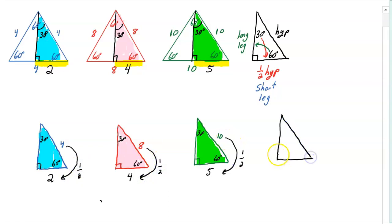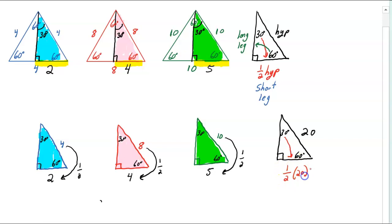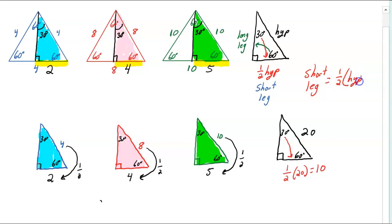Remember, the short leg is across from the 30-degree angle. So if the hypotenuse was 20 and you had a 30-60-90, then the short leg — the side across from the 30 — is going to be half of 20, which is 10. The short leg is always half of the hypotenuse.